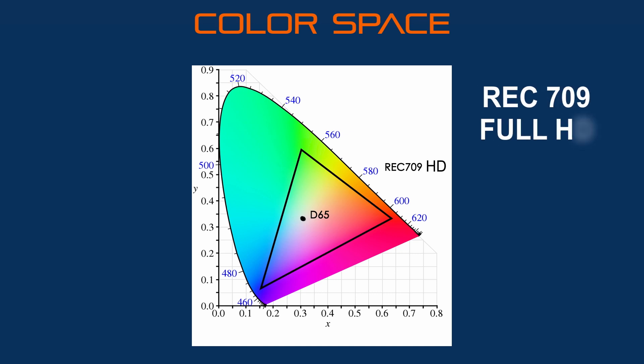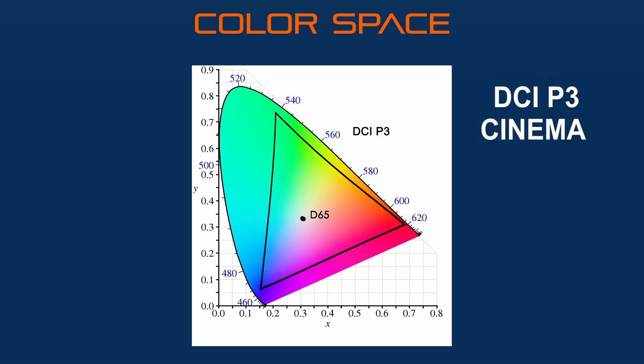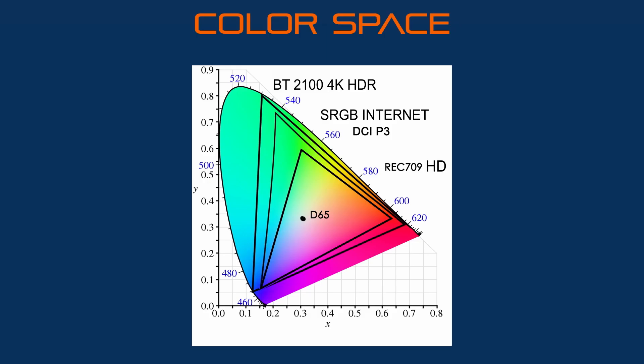The Rec.709 is a color volume for HD content. The BT.2020 is the color volume for 4K content. The BT.2100 is the color volume for 4K HDR content. The DCI-P3 is the color volume used for cinema. And the sRGB is the color volume for content broadcast on the internet. There are plenty of color spaces, but the ones that interest us are the sRGB, Rec.709, BT.2020, and DCI-P3.